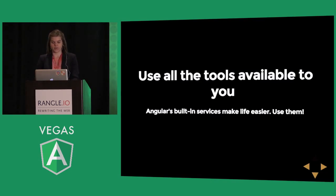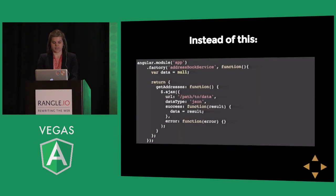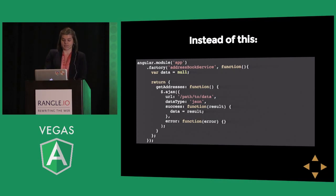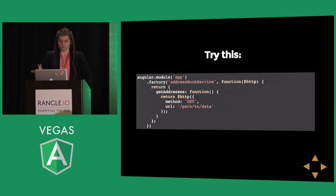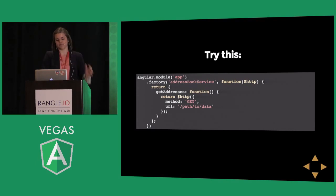Once we have that taken care of, we can start to look at some of the other things we're doing within these services we've now created. A lot of times people forget about the built-in services Angular provides. In this particular example, the $http service. I've seen developers trying to use Angular but not totally sure how to do it properly, so they fall back to what they already know — we have a jQuery Ajax call instead of using the $http service. This isn't something we can test easily; we can't really mock out Ajax this way. A better way is in our address book service factory to inject the $http service — we have to change a little bit of code, but this way we can mock it out and we're properly using what Angular's already given us.